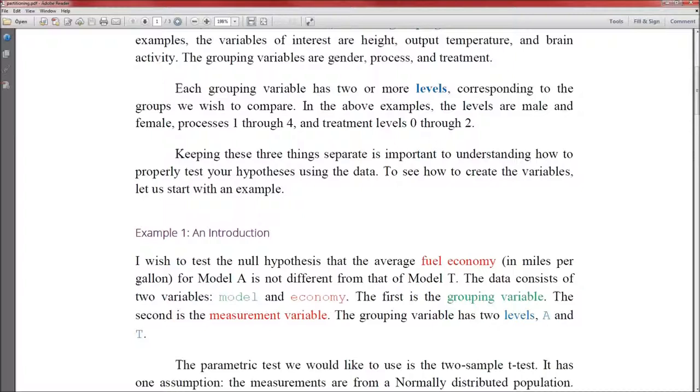And those three things are the measurement variable, the grouping variable, and the levels. And to really emphasize this, if you notice on the handout, it's color coded. The measurement variables are in red, the grouping variables are in green, and the levels are in blue. And everything else is going to be in black.